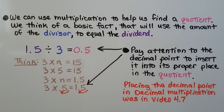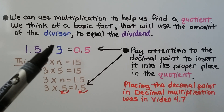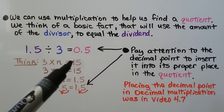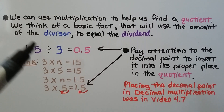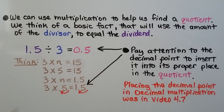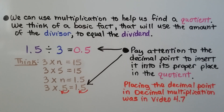Not only can we use multiplication to check our division answer, we can use multiplication to help us find a quotient. We think of a basic fact that will use the amount of the divisor to equal the dividend. We have one and five tenths divided by three. We think: three times some number n equals fifteen — we look at this as a whole number, so three times five equals fifteen. Then we pay attention to the decimal point to insert it into its proper place in the quotient.